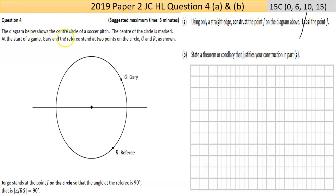The diagram shows the center circle of a soccer pitch. The center of the circle is marked. At the start of the game, Gary and the referee stand at two points on the circle labeled G and R as shown. Gary is standing there and the referee is standing there. Now George stands at point J on the circle so that the angle at the referee is 90 degrees.